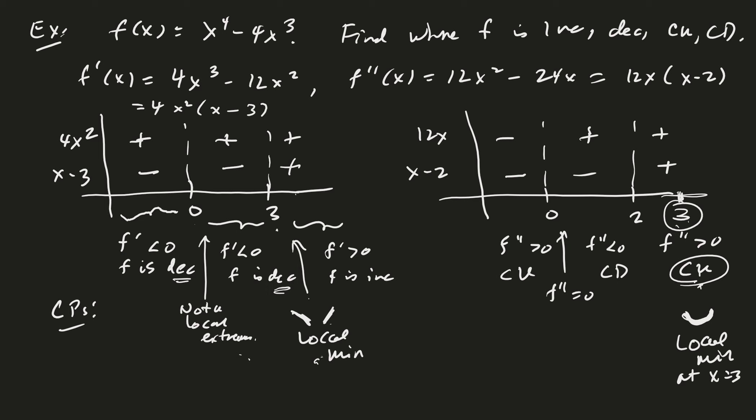That's how we use the first and second derivative tests to figure out where our function is increasing, decreasing, concave up, concave down, and to identify local extrema. In this case we found just one local extremum. In the next video, we'll take a look and maybe even try to sketch the function.